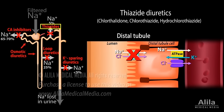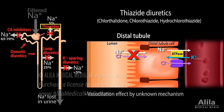Thiazide diuretics inhibit the sodium chloride co-transporter in the distal tubule, which reabsorbs about 5% of the sodium load, and are not as powerful as loop diuretics. However, thiazides also have a vasodilation effect by a still poorly understood mechanism. Thiazides are first-line drugs for uncomplicated hypertension, and most effective for heart failure prevention.